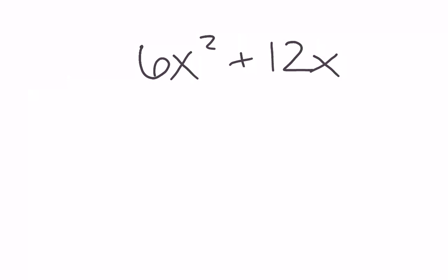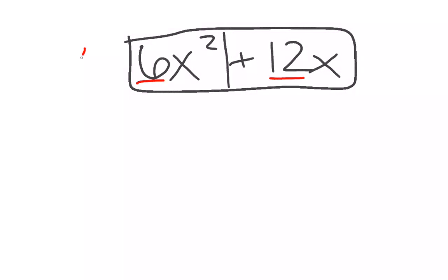What you want to be careful of is when I see something like 6x squared plus 12x, not automatically saying that 2 is your GCF. Yes, 6 times 2 is 12, but is the biggest thing that goes in? No. The biggest thing that goes into 6 and 12 is 6. I can take out an x because it's in both boxes.